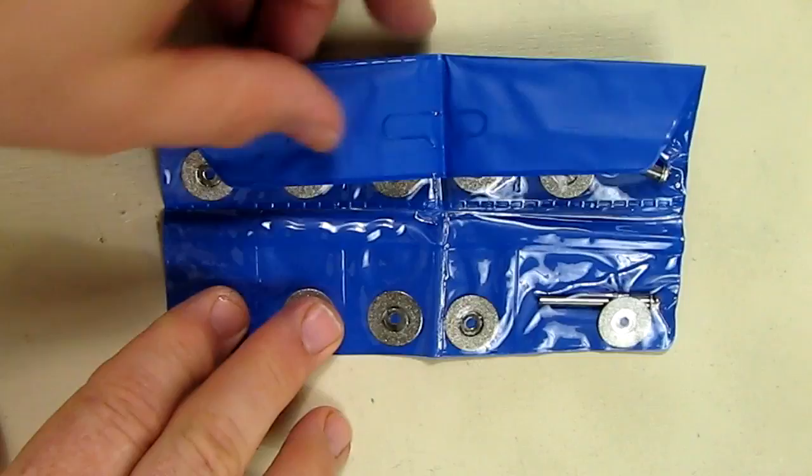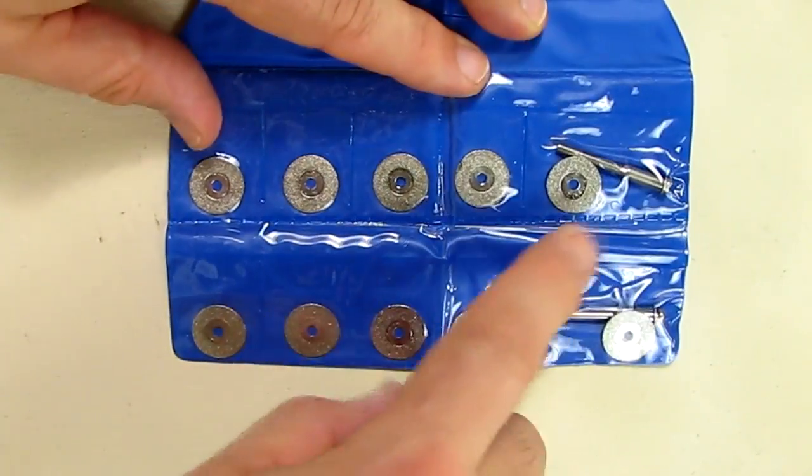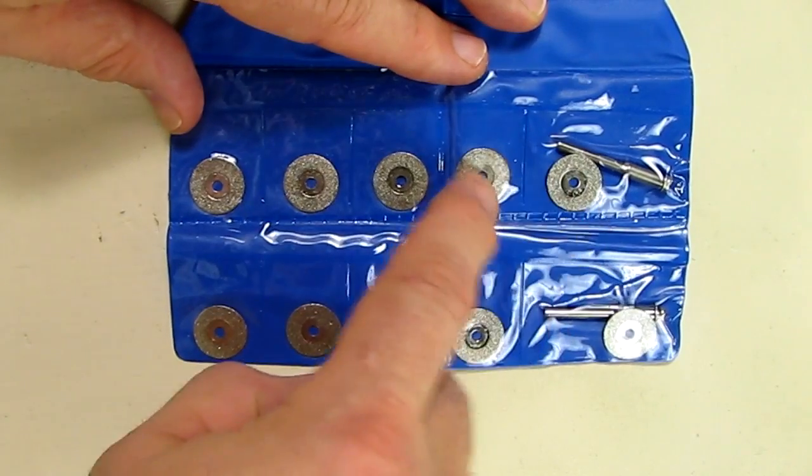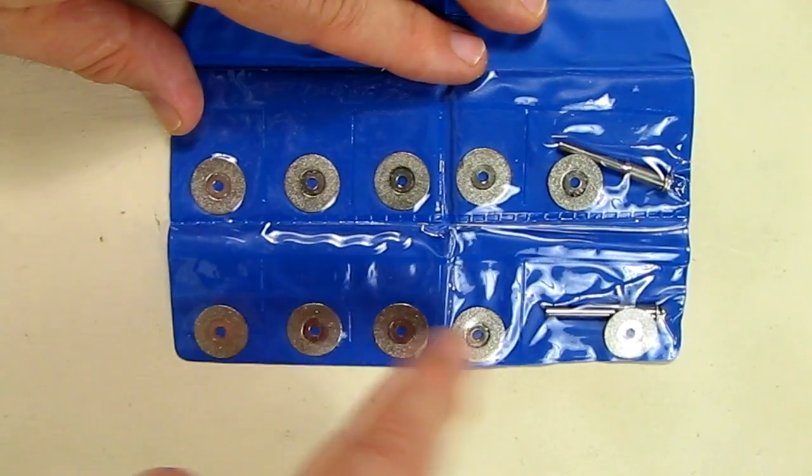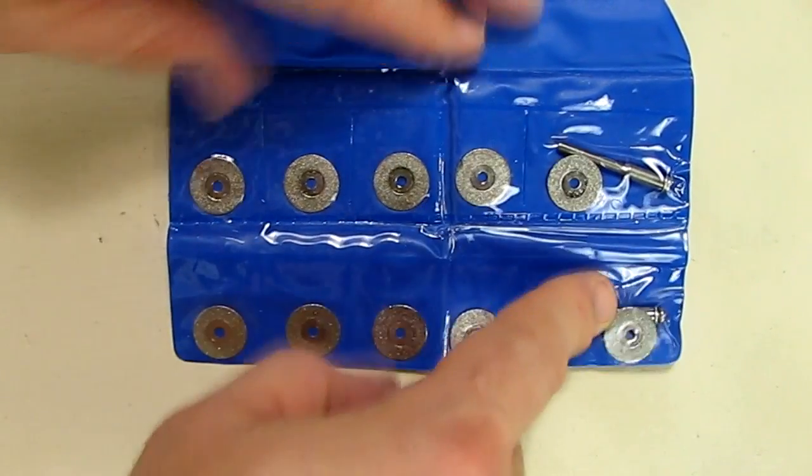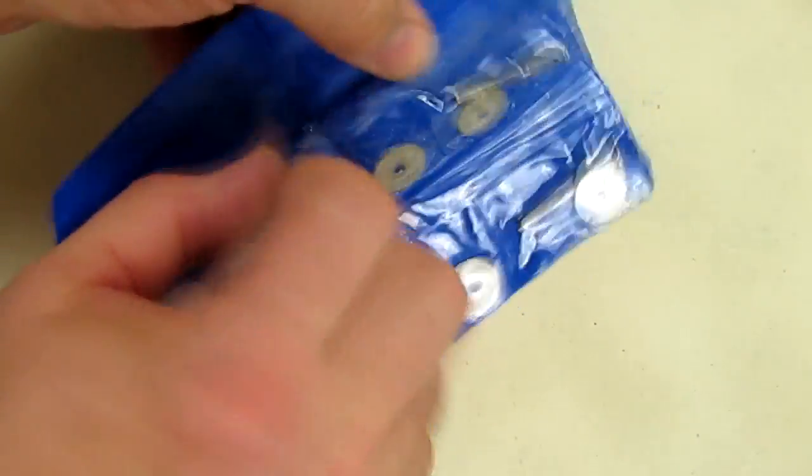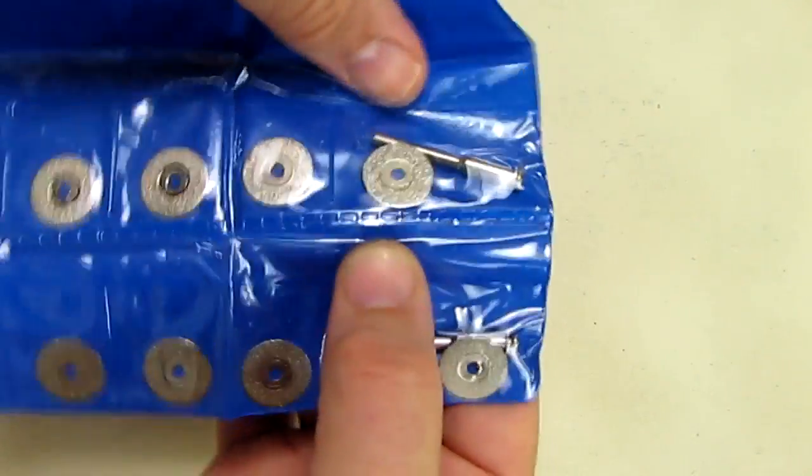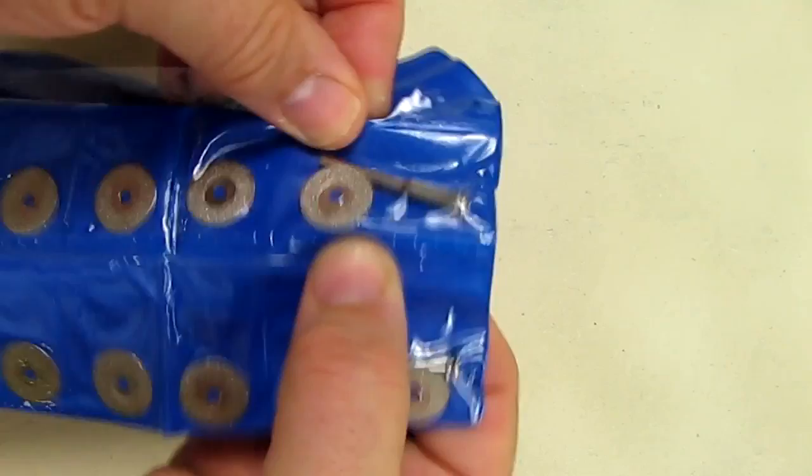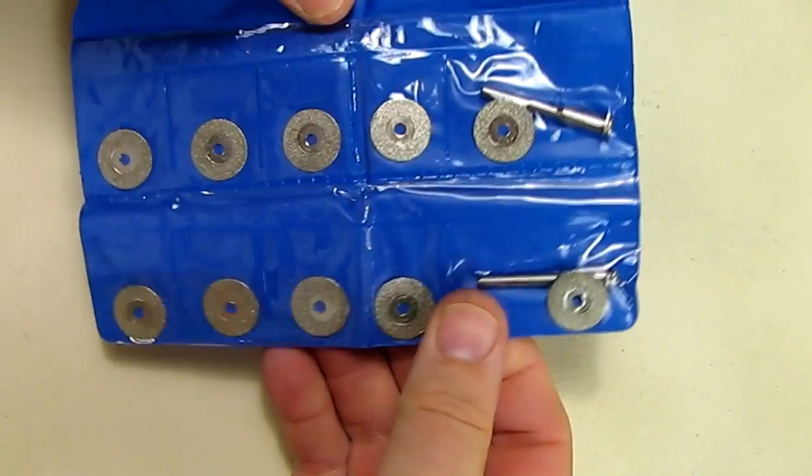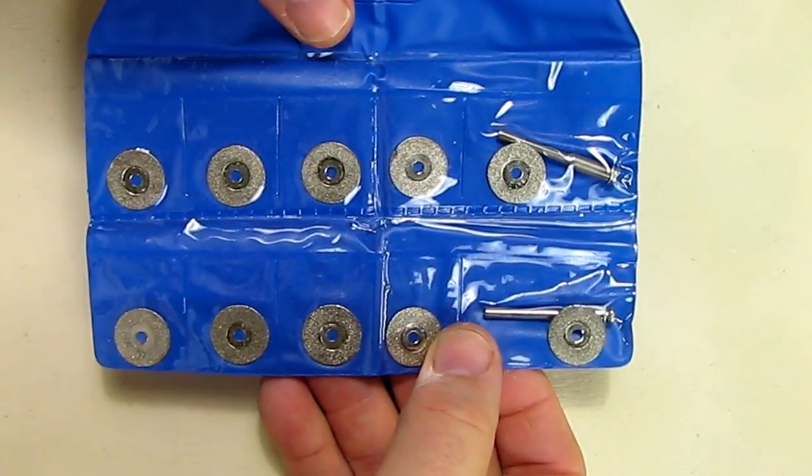Here's what it comes with: a little holder pouch and the discs themselves. 1, 2, 3, 4, 5, 6, 7, 8, 9, 10 discs, and two mandrel holders are included. I'm going to set this up and test it on a Dremel tool for you.